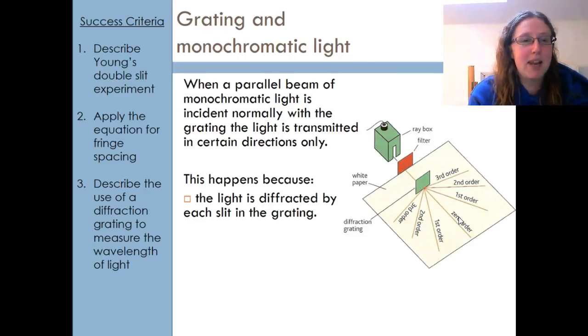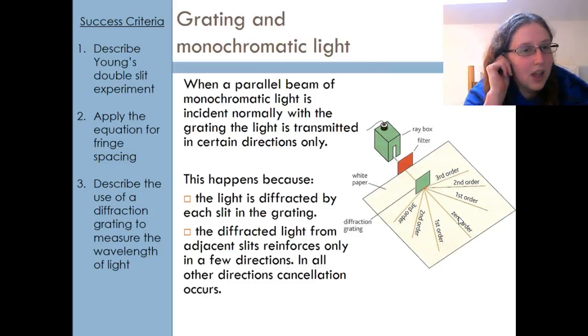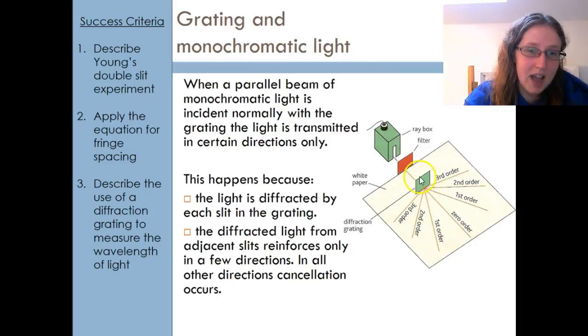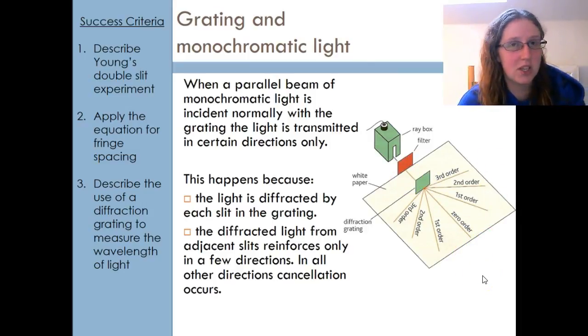The reason this is happening is because light is being diffracted by every single slit in that grating. Every single slit almost becomes its own little tiny source of waves. Each of those sources of waves then starts to interact with each other. They start to superimpose as they travel out through space. In most situations, in most of the points between each of these beams, I'm getting cancellation. But where I've got the beams, I've got reinforcement. I only end up with these specific points where the beams travel.